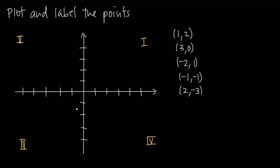We all know about a number line by now. We can pretend that this horizontal line here is basically a number line for x. This is always going to be the case — the horizontal axis is the x-axis. Just like a regular number line, the right-hand side is going to be the positive direction of the x-axis, and the left-hand side is going to be the negative direction.